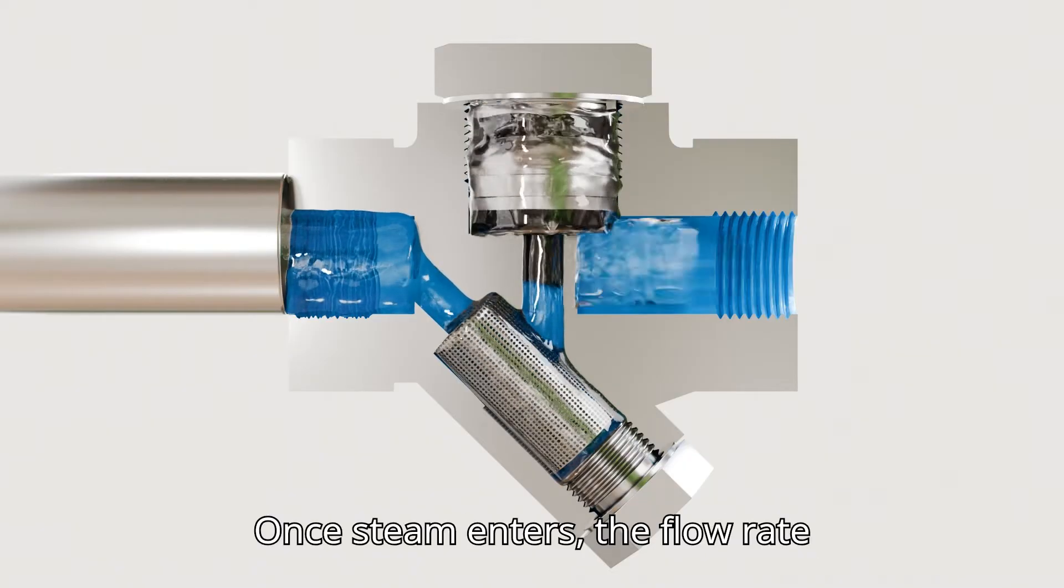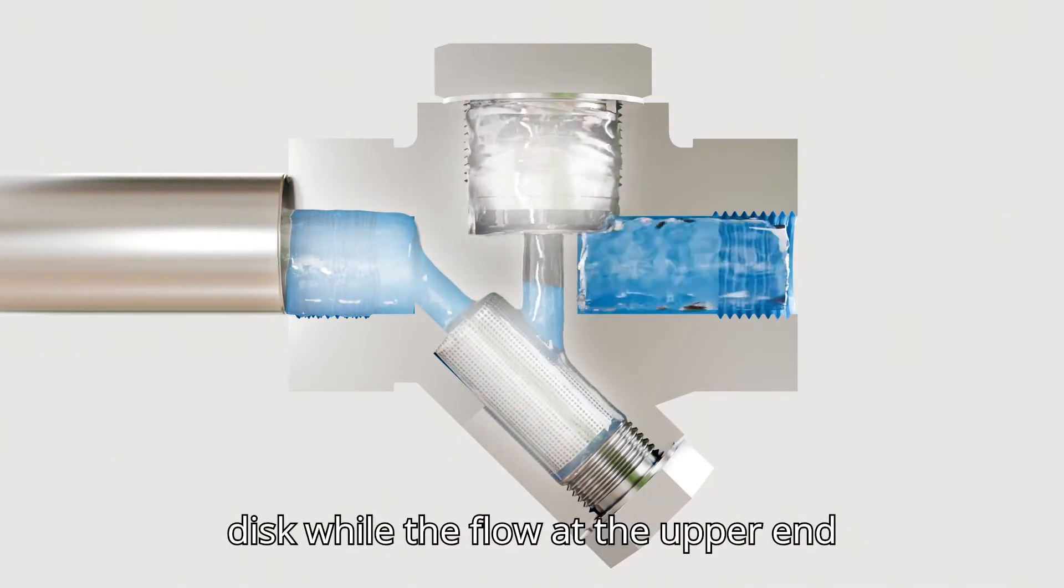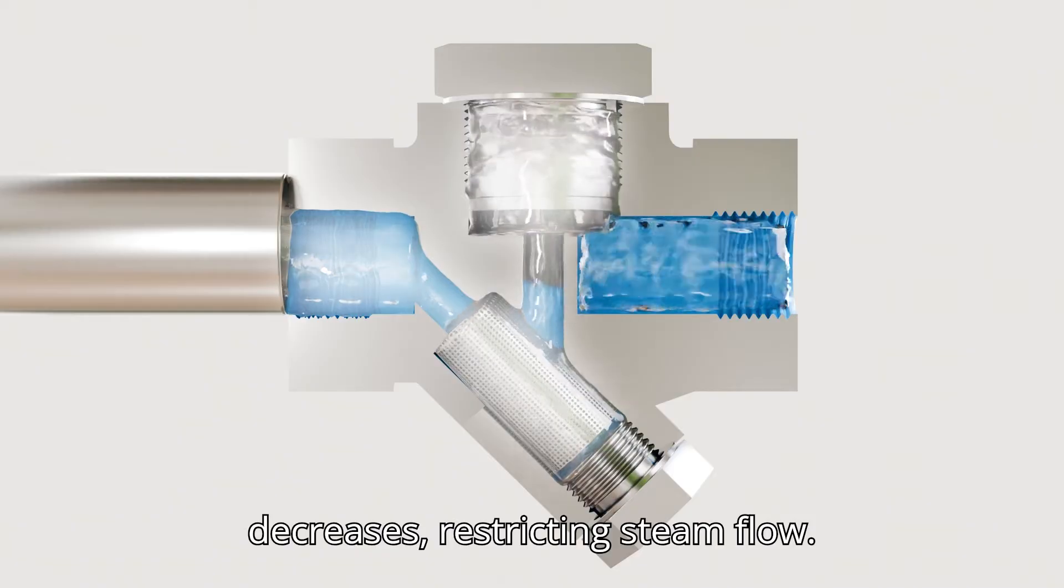Once steam enters, the flow rate increases at the lower end of the valve disc while the flow at the upper end decreases, restricting steam flow.